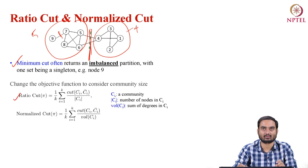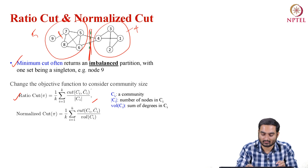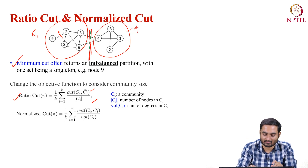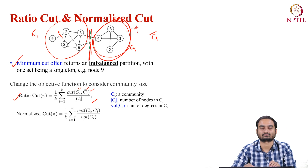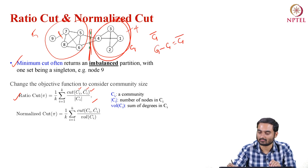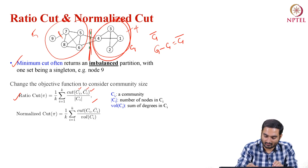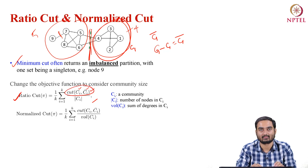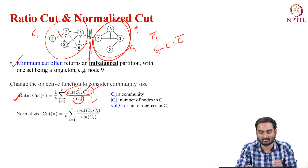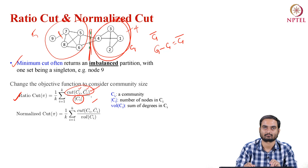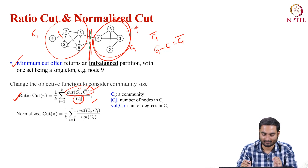We define something called ratio cut. Ratio cut is defined as a fraction where the numerator is the cut — meaning the edges between two partitions C_i and C_i-bar (where C_i-bar is the rest of the network, G minus C_i) — and the denominator is the size of the community. This is ratio cut.